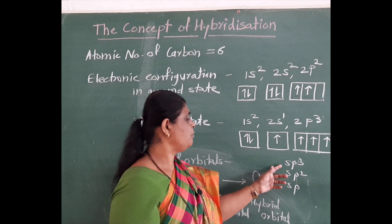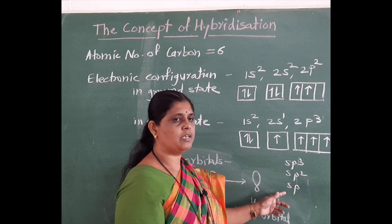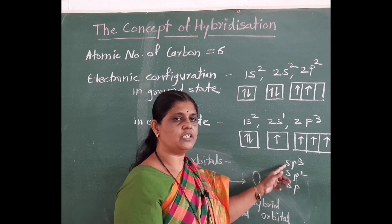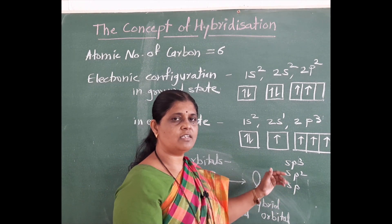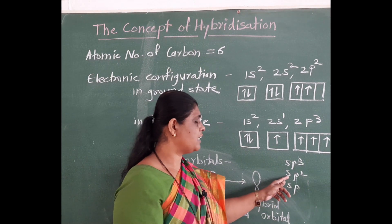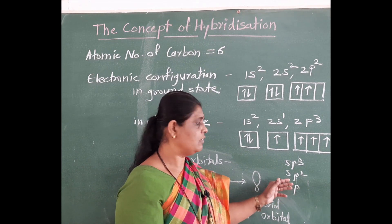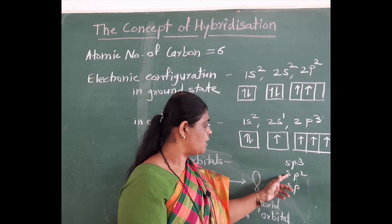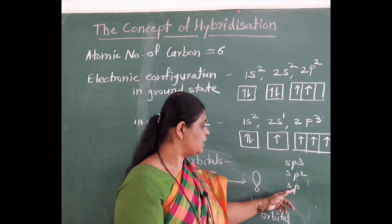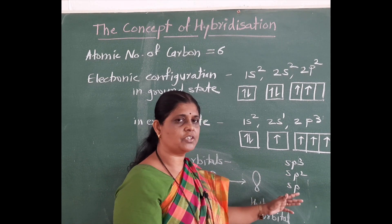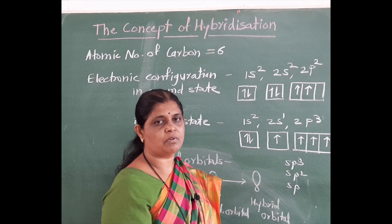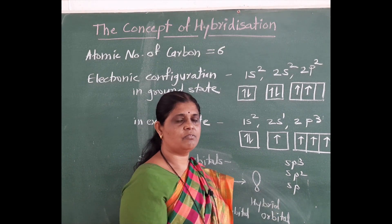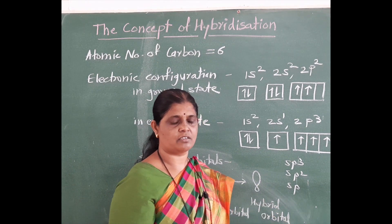Depending upon hybridization, the bonds present differ. In SP3 hybridization, only single bonds are formed. In SP2 hybridization, a pi bond is formed, meaning a carbon double bond carbon is formed. And in SP hybridization, a carbon triple bond carbon is formed. We will see this in the next lecture.